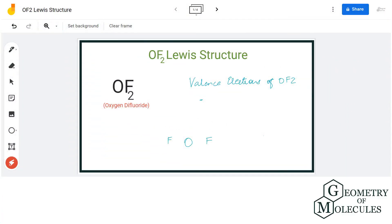Hi guys, today in this video we are going to look at the Lewis structure for OF2. It's a chemical formula for oxygen difluoride. It is made up of one oxygen atom and two fluorine atoms.